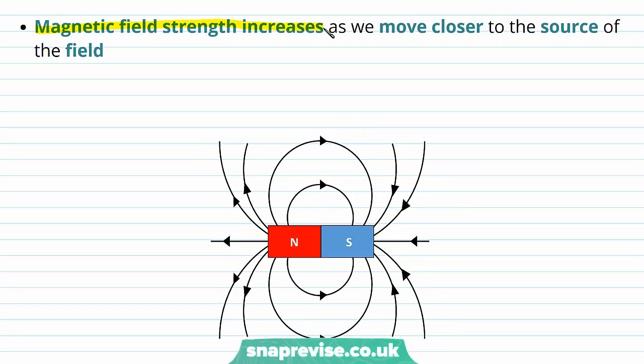Magnetic field strength increases as we move close to the source of the field. Here we have drawn the magnetic field lines of a bar magnet and it turns out that as we get closer to the magnet itself, which is the source of the field lines, there is an increase in magnetic field strength.